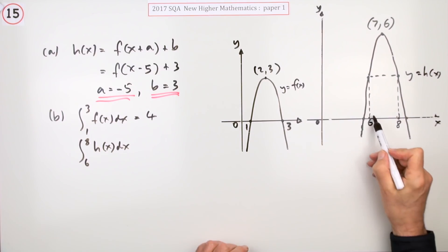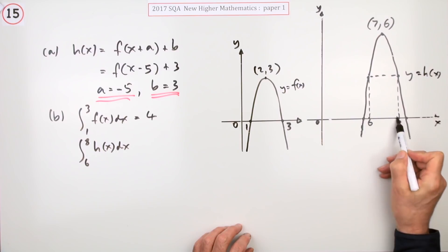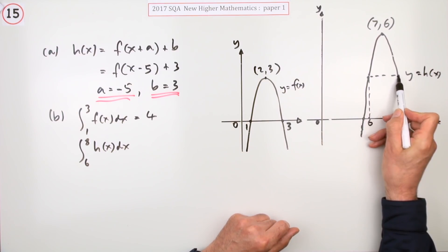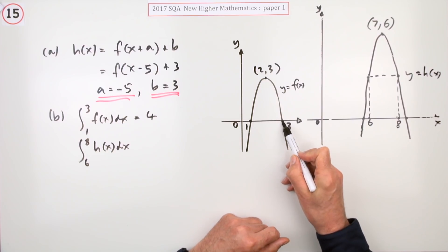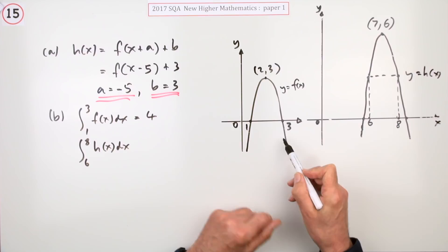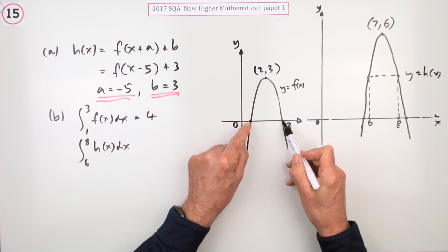Well one thing to notice is they've given you a clue with these dotted lines. Six and eight are two apart, so those two points in the graph are two apart, so they must correspond to these two points. Because along this parabola there'll only be one pair of horizontal points which are two apart.